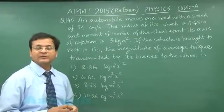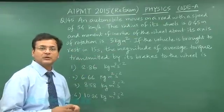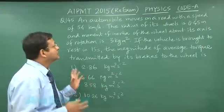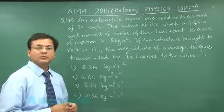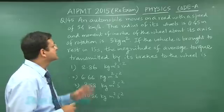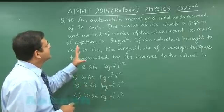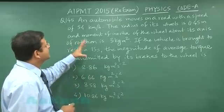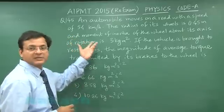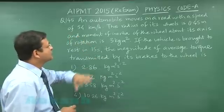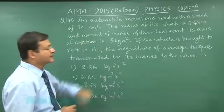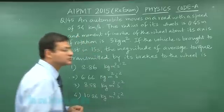This question — question 145 — is based on the chapter circular motion dynamics. It is given that there is a wheel which has a linear velocity, and you have to find out the average torque.